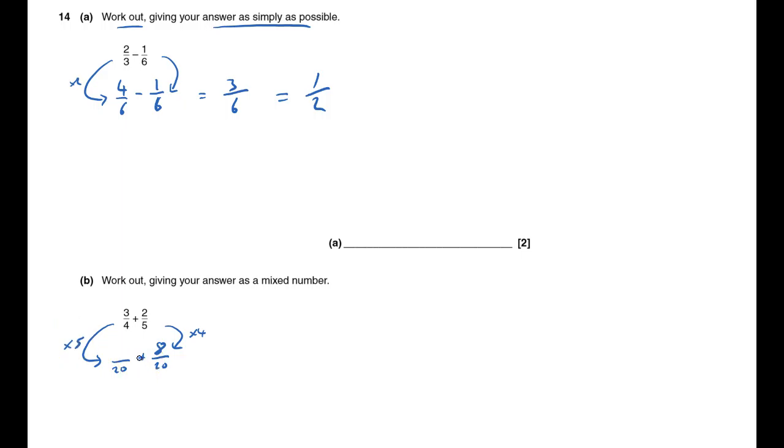To do this one, I times the bottom by 4, so I need to times the top by 4. That'll give me eight twentieths. For this one, I need to times the bottom by 5, so I times the top by 5 to give fifteen twentieths. I've got fifteen twentieths, and eight more of them will be twenty-three twentieths.